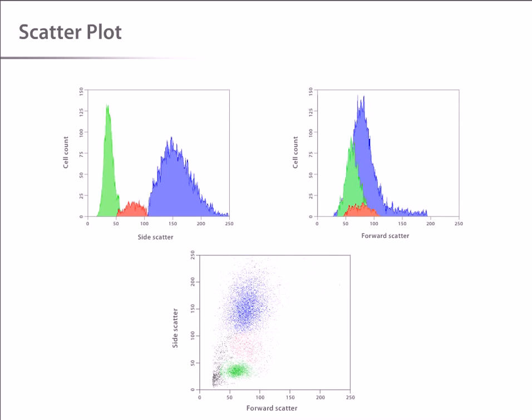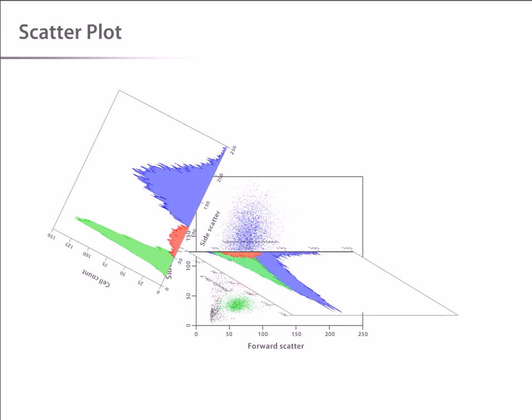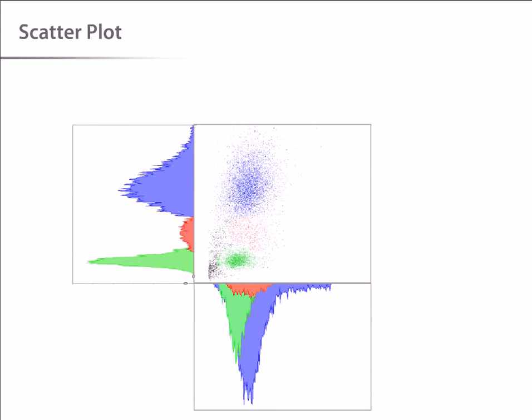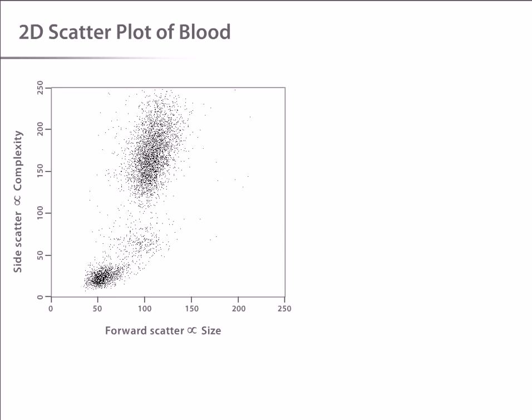This is done through the use of two dimensional dot or scatter plots. You can see that the peaks from the forward and side scatter histograms correlate with the colored dots in the scatter plot. Now we can view the results obtained when we create a scatter plot using forward and side scatter data from a typical peripheral blood cell run.